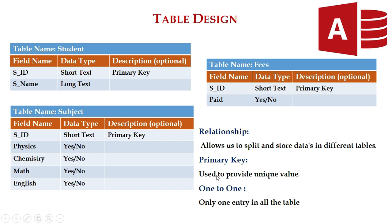So what is a relationship and why do we need it? If you have a relationship between tables, you are allowed to split and store data in different tables. What is the primary key? It is used to provide a unique value and avoid duplicate values. What is one-to-one relationship? It allows only one entry in all the tables.